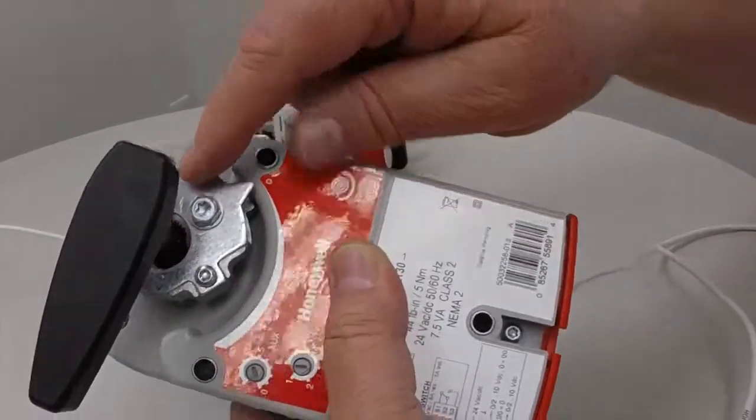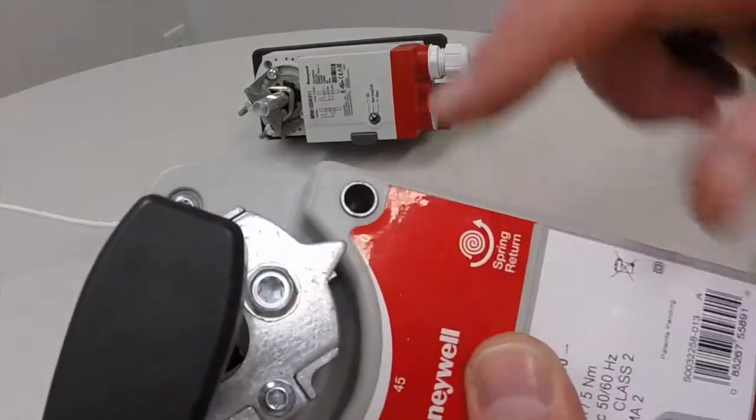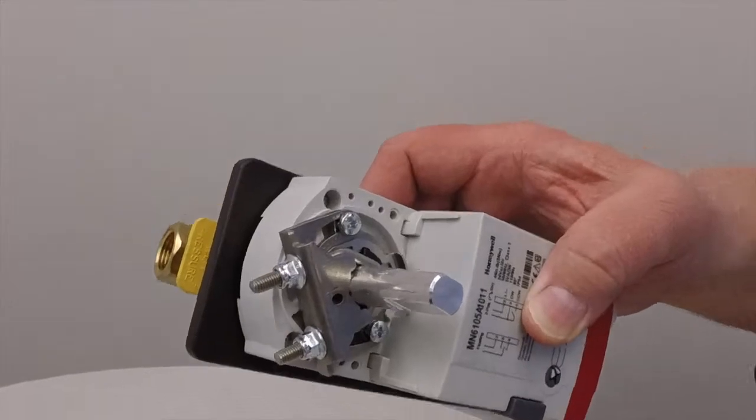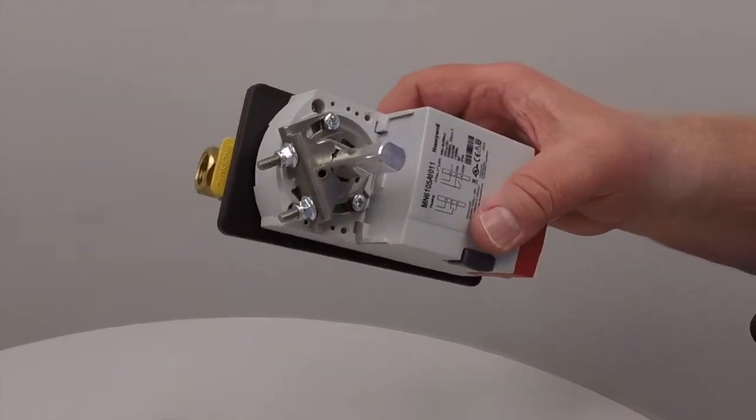Now on this particular actuator, this is where you would loosen it and tighten it. And on this one, it's on these two right here. That's how you would loosen it or tighten it.